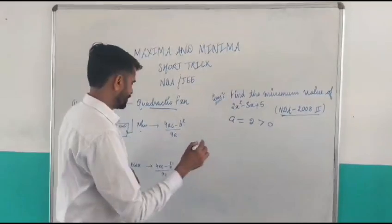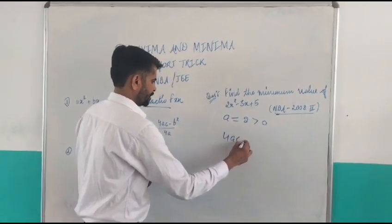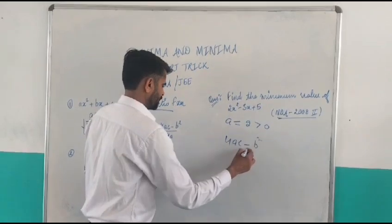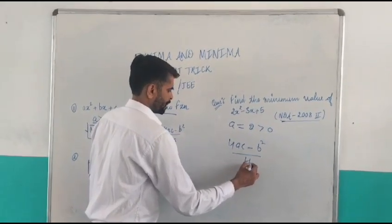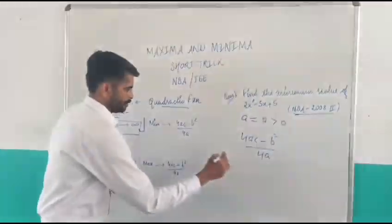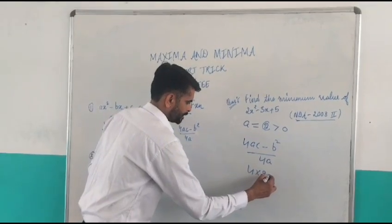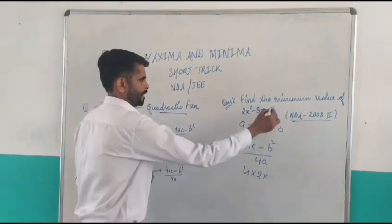So, what is the value of 4AC minus B squared divided by 4A? Now, 4AC, what is A? That is 2. And what is C? That is 5.